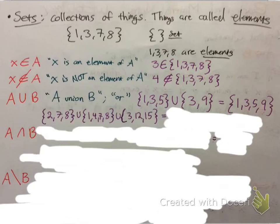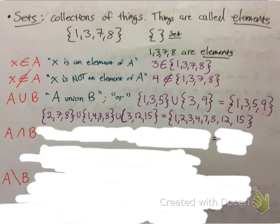Let's do another example with three unions. You would have 1, 2, 3, 4, 7, 8, 12, and 15 — pretty much every number across the sets. Notice how there are two 8's, but we don't repeat the 8. No repetitions when doing unions, because it's already included.